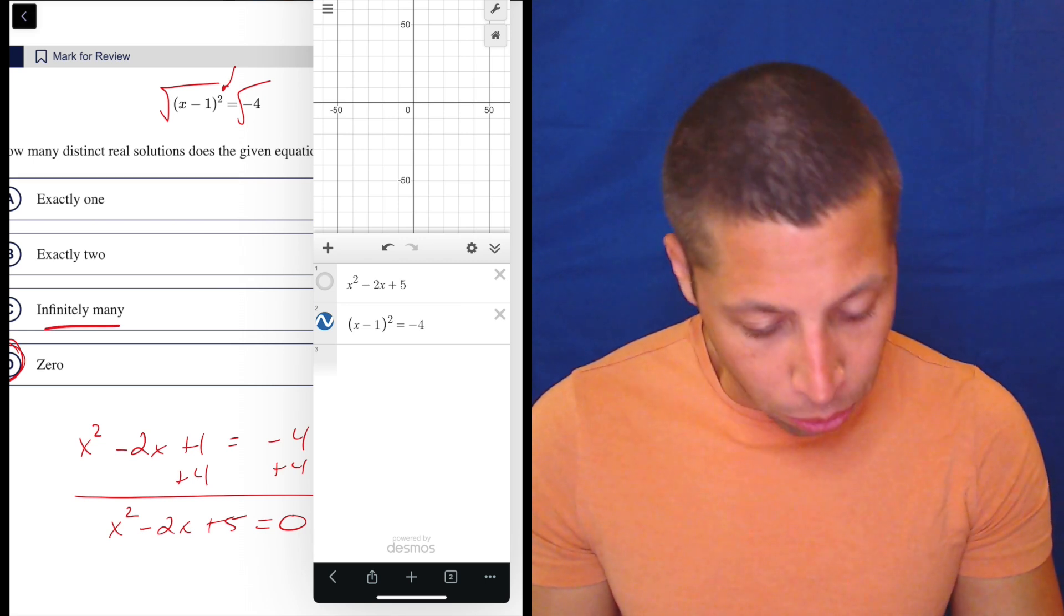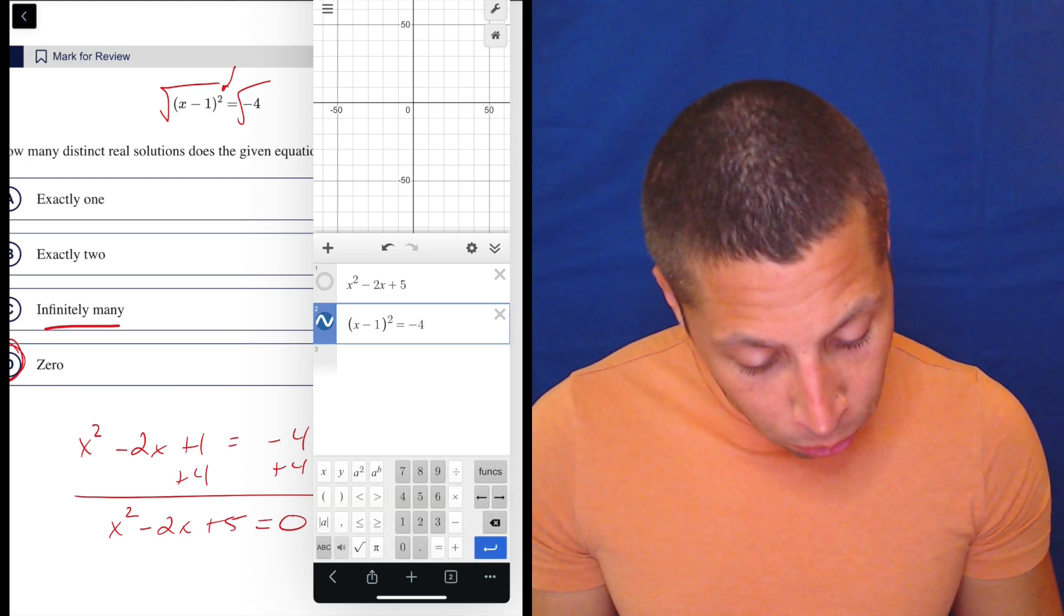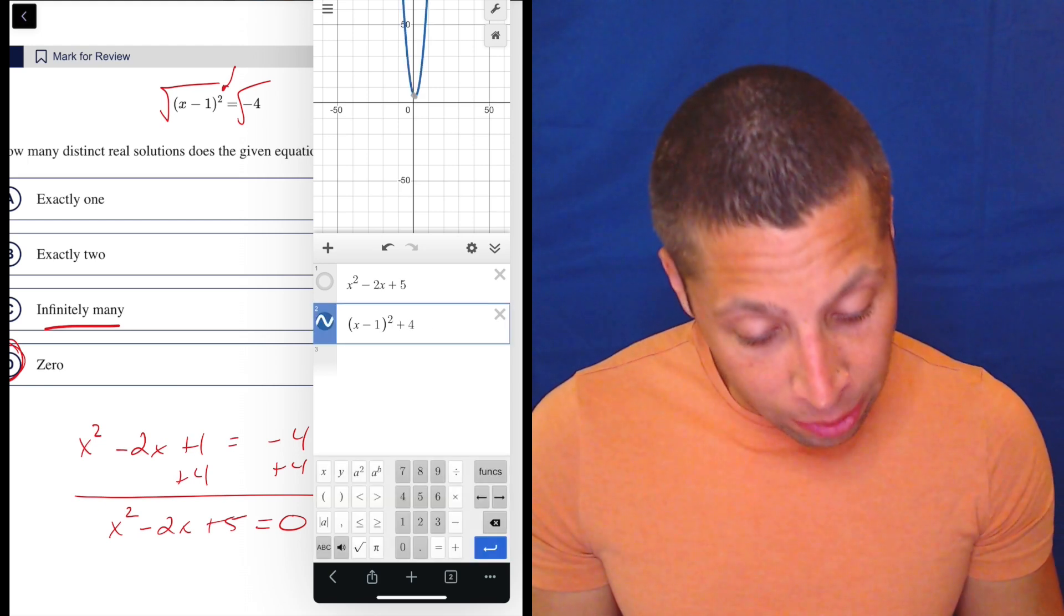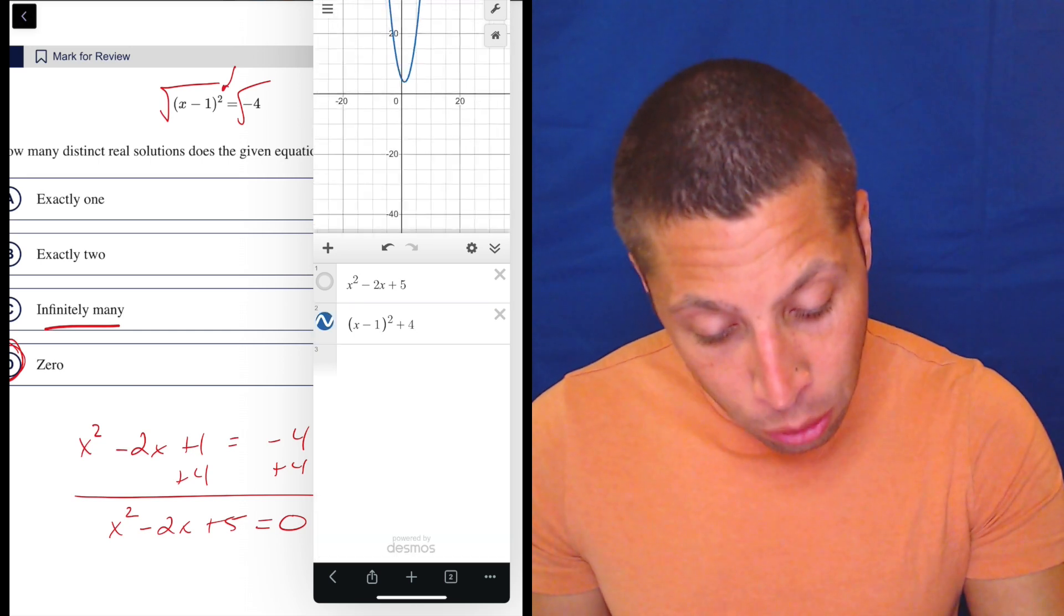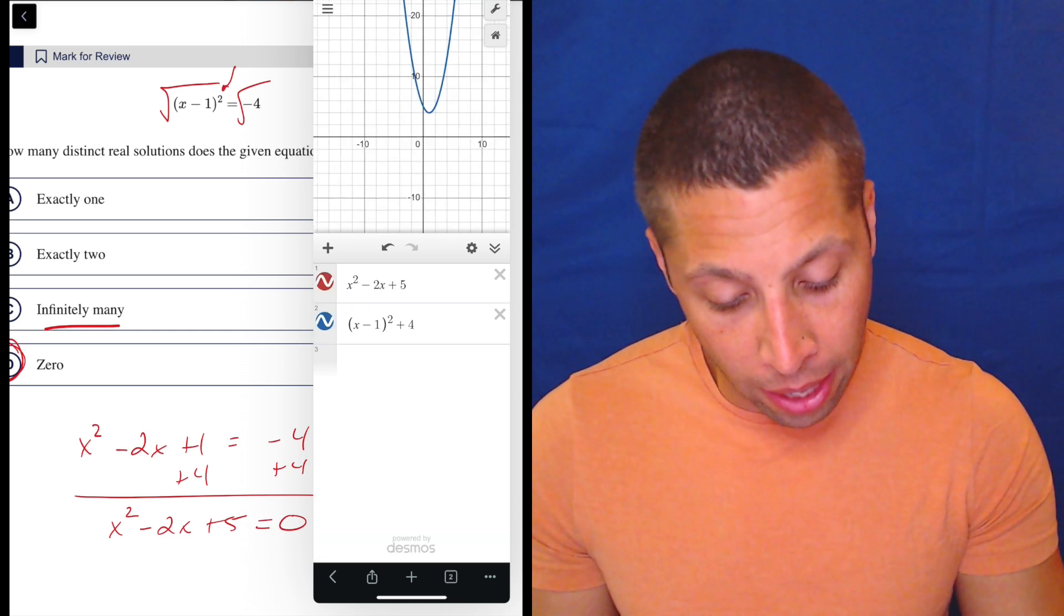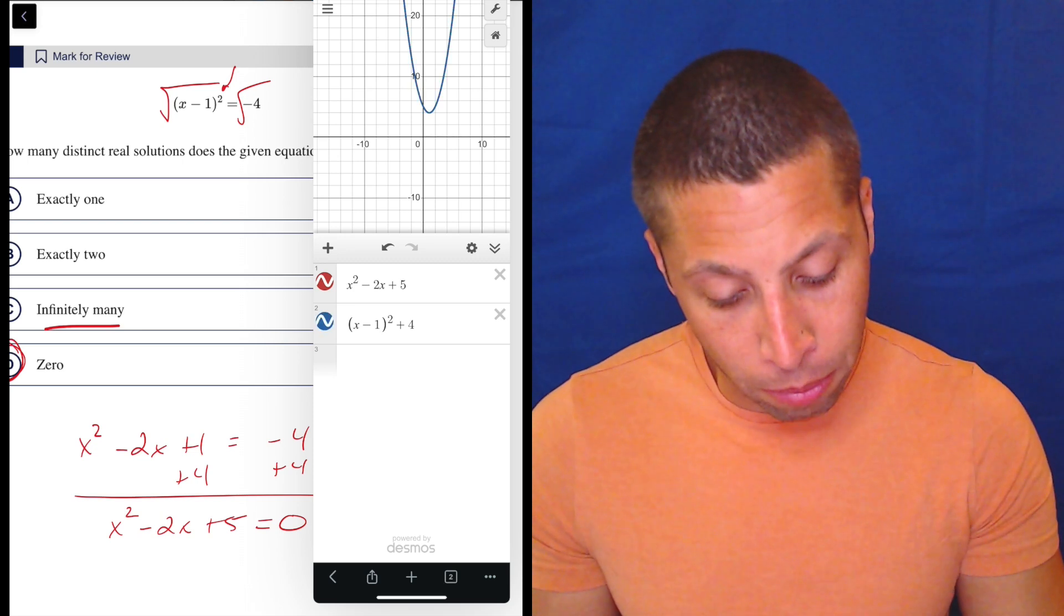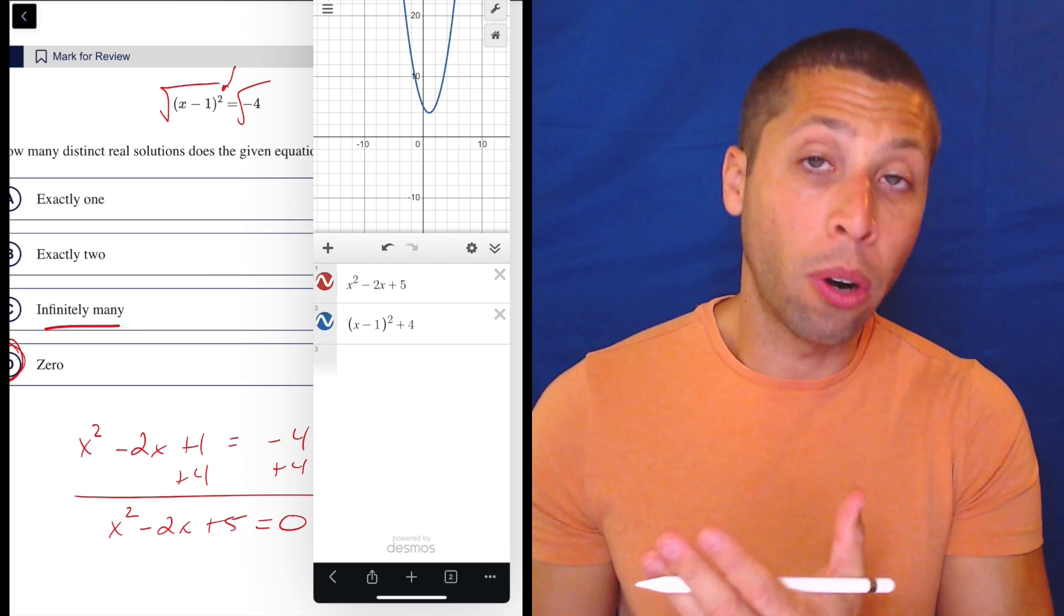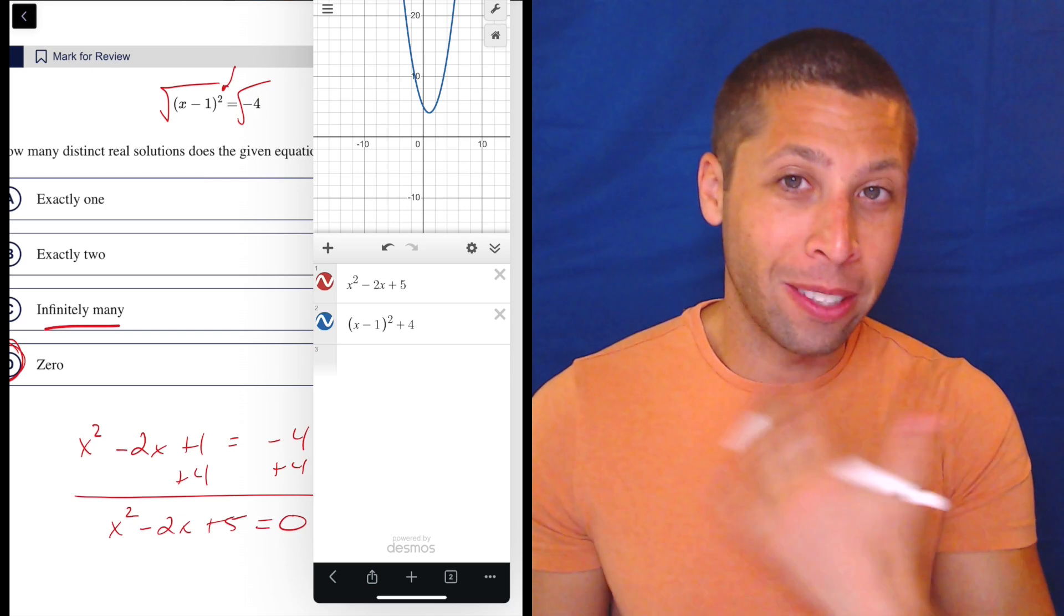So what I could do is I could move that 4 over. So I could just do plus 4 and then that is equal to zero. But if I do it, I can see that there's nothing happening. And actually, that's the exact same thing as the red one. If I turn the blue and the red on and off, you can see they're the exact same. So moving that 4 over gets me to a place where I can see the parabola.